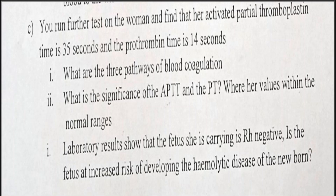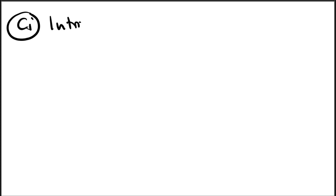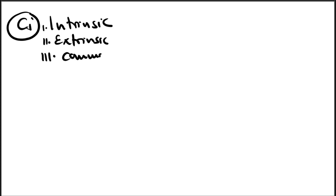Part C: further tests on the woman show an activated partial thromboplastin time (APTT) of 35 seconds and prothrombin time (PT) of 14 seconds. The question asks: what are the three pathways of blood coagulation? The three pathways are: number one, the intrinsic pathway; number two, the extrinsic pathway; and number three, the common pathway.